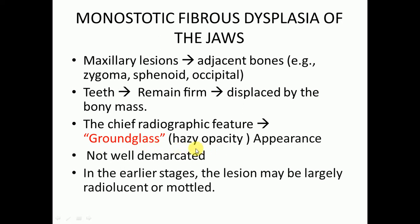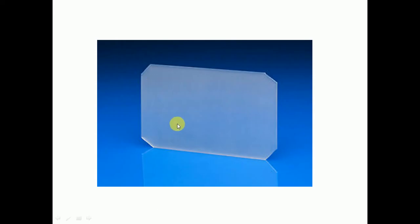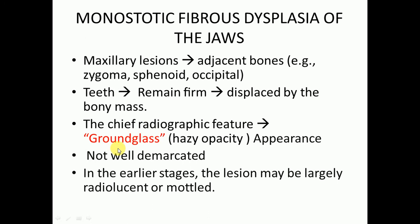The chief radiographic feature is ground glass appearance — there will be a hazy opacity, not completely transparent, like frosted glass. As shown in the image, this is not completely transparent; this haziness is present. Ground glass appearance was also seen in juvenile ossifying fibroma but is more characteristic here in fibrous dysplasia. In early stages, lesions may be largely radiolucent. These lesions are not well demarcated.